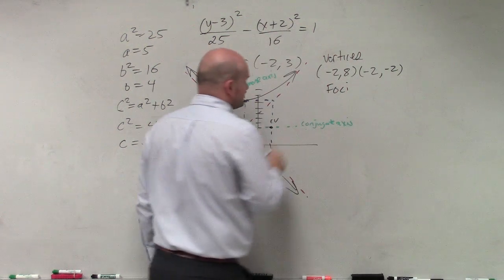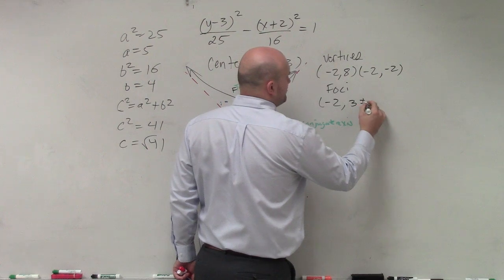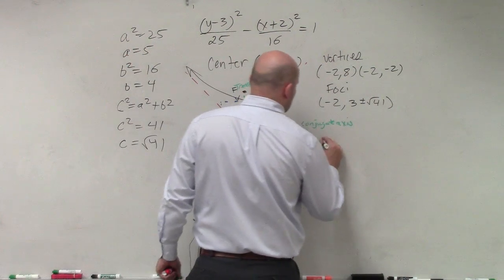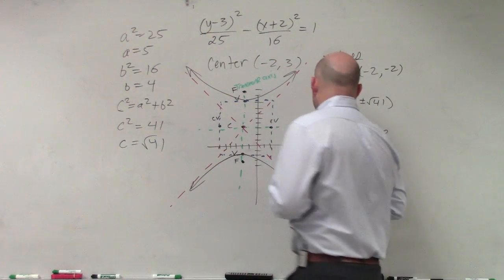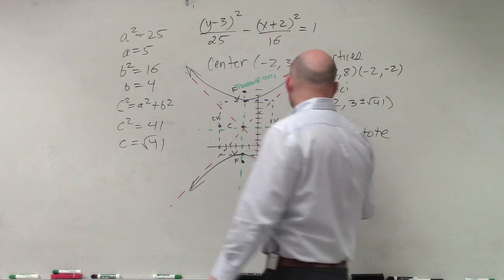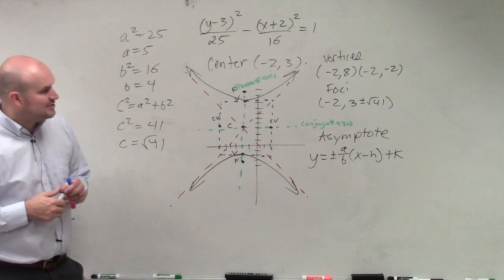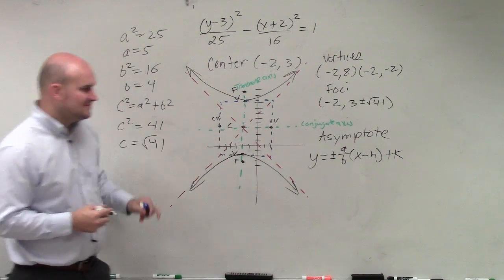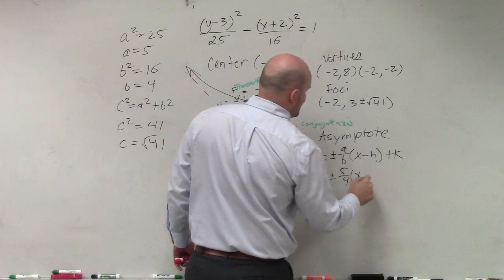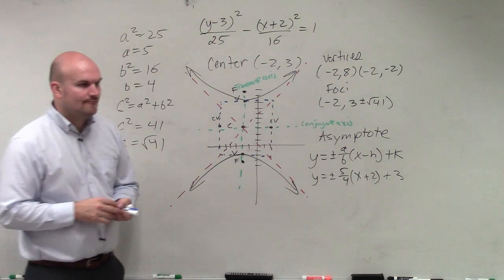My foci are the same but at a distance of √41. So (-2, 3 ± √41). Last is the asymptotes. For a hyperbola with vertical transverse axis, the equation is y = ±(a/b)(x - h) + k. We have all the information: a is 5, b is 4, so it's y = ±(5/4)(x + 2) + 3. And there you go. That's it.